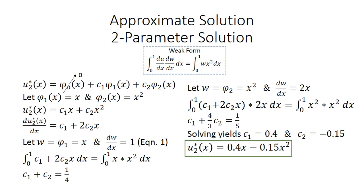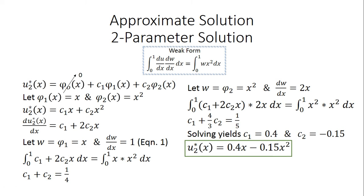The two-parameter solution follows a very similar set of steps, but our main equation now includes a third term: c2 phi_2 of x. With phi_0 still equal to 0, we have two unknowns, c1 and c2, requiring two equations. We let phi_1 equal x and phi_2 equal x squared, giving u2 star of x equals c1 x plus c2 x squared. Taking the partial derivative, du/dx equals c1 plus 2c2 x.